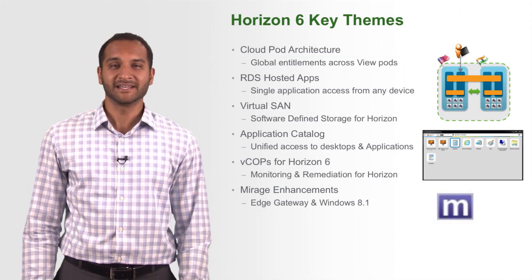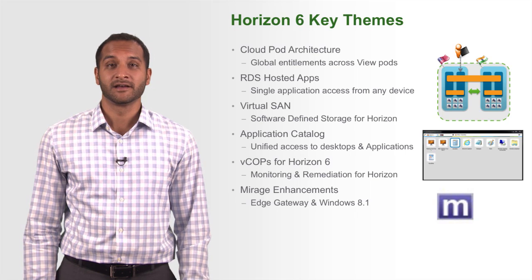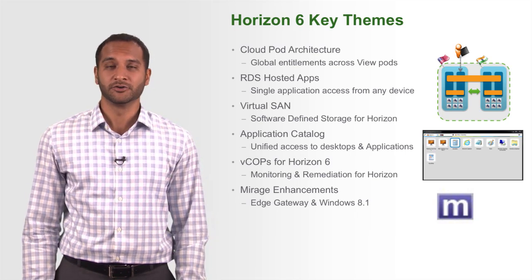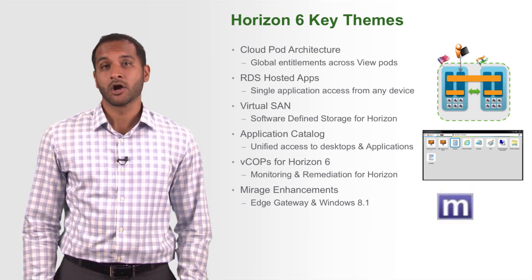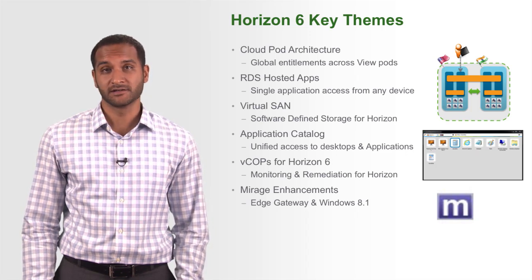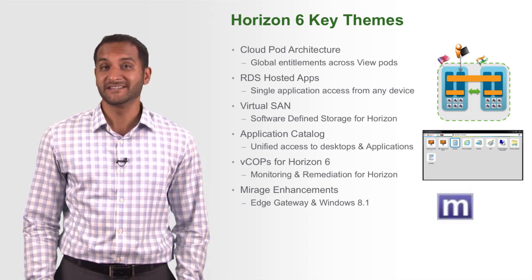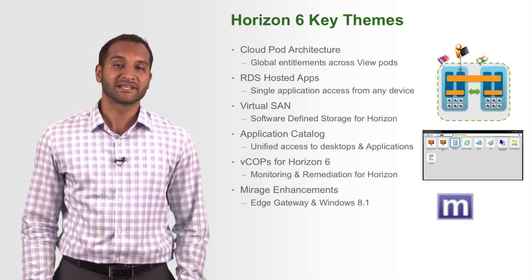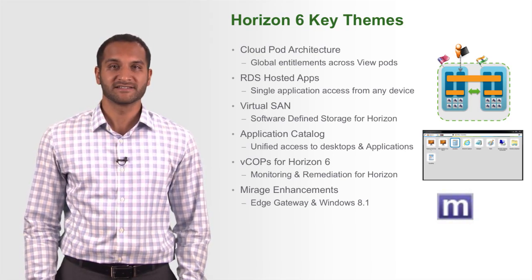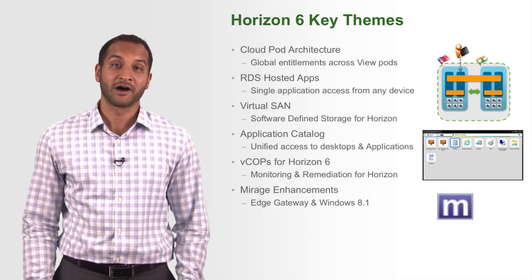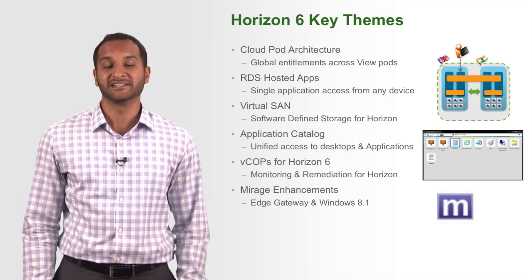I'll first walk us through some of the key themes that we've developed in Horizon 6. The major themes in this release include our Cloud Pod architecture, RDS hosted applications, Virtual SAN (also known as vSAN), our application catalog, VC Ops for Horizon 6, as well as some Mirage enhancements. Let's dig a little bit deeper into each of these.